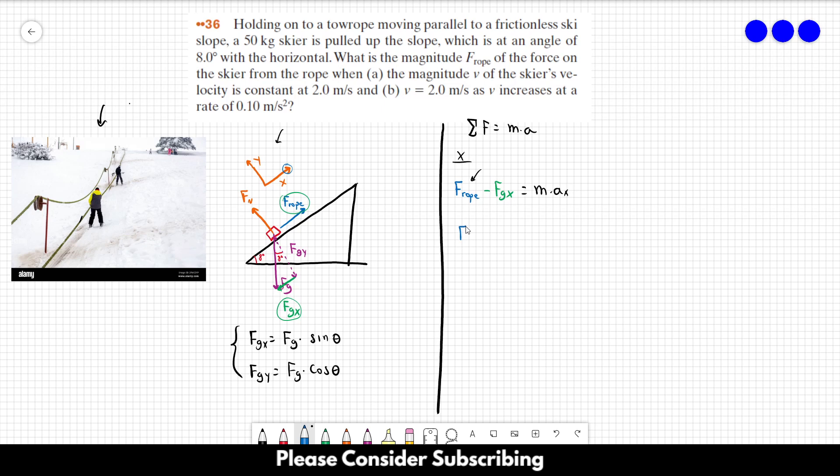F rope would be equal to mass times acceleration in the x direction plus fgX, which is equal to fg sine of the angle. And fg is equal to mass times gravity. So this is mass times ax plus mass times gravity times the sine of the angle. Now we just have to replace the letters by the numbers, and that's pretty much it.